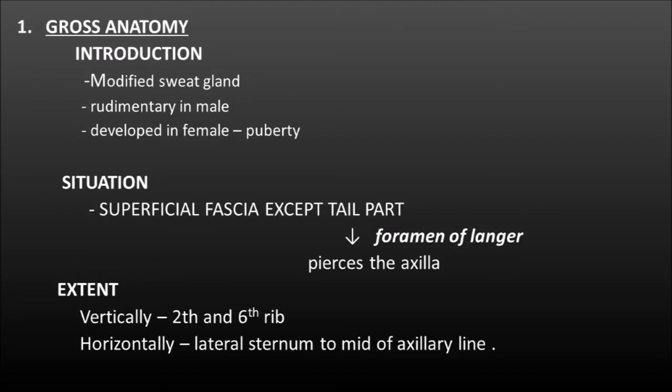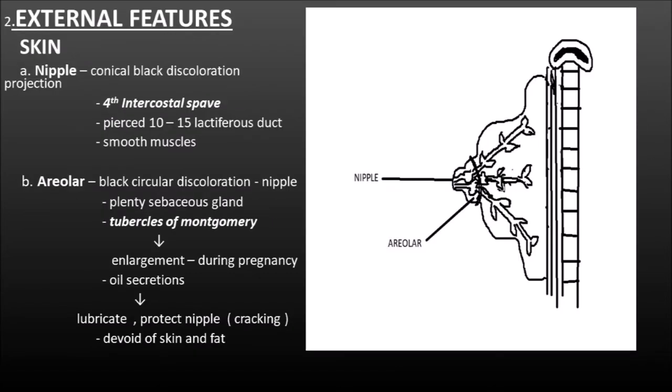To give a very small introduction, it is a modified sweat gland, rudimentary in male, well developed in the female after puberty. It is present in the superficial fascia except the tail part which pierces the deep fascia of the axilla through the foramen of Langur, and is called the tail of Spence. It vertically extends from the second to the sixth rib and horizontally extends from the lateral border of sternum to the mid-axillary line.